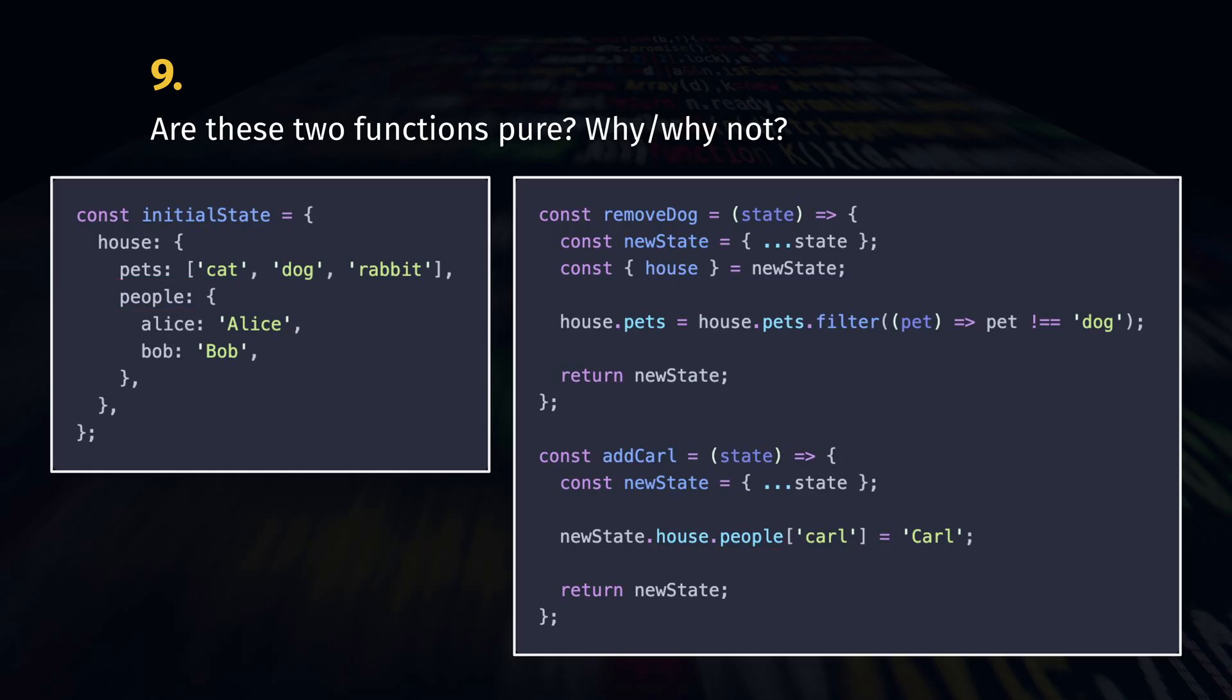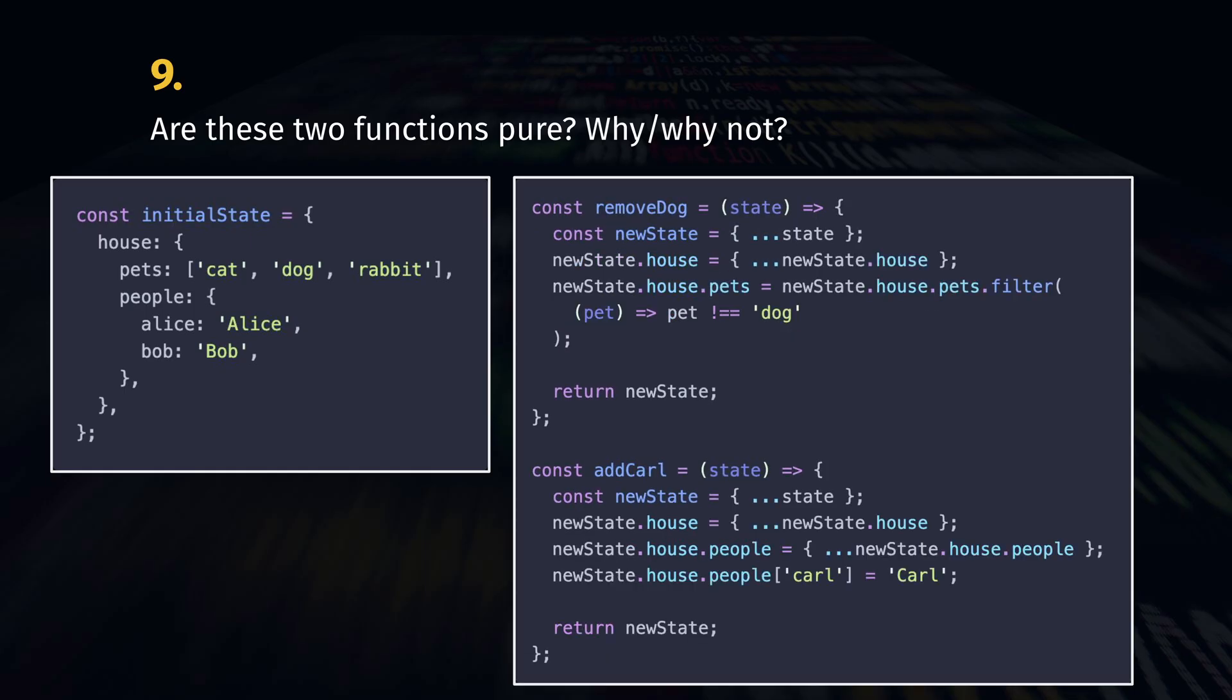Without using a library for immutable structures or a deep copy, a simple fix is to manually copy the object on each level. Here the state is new, the house is new and the pets are new. Filter returns a new array as well. And here the state is new, the house is new and the people are new. So we can safely add a new property card to it.